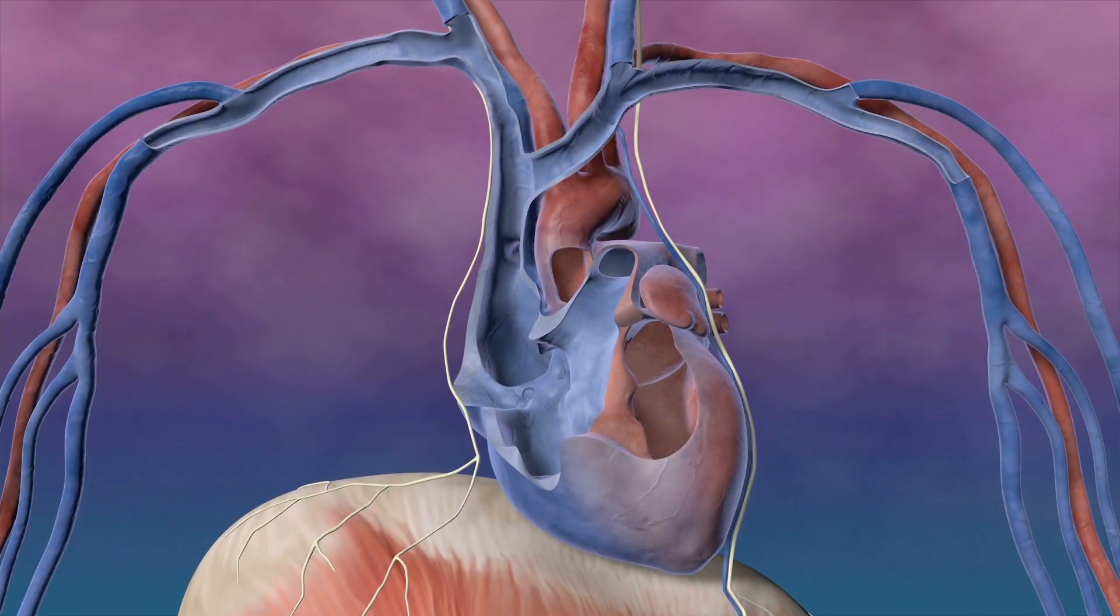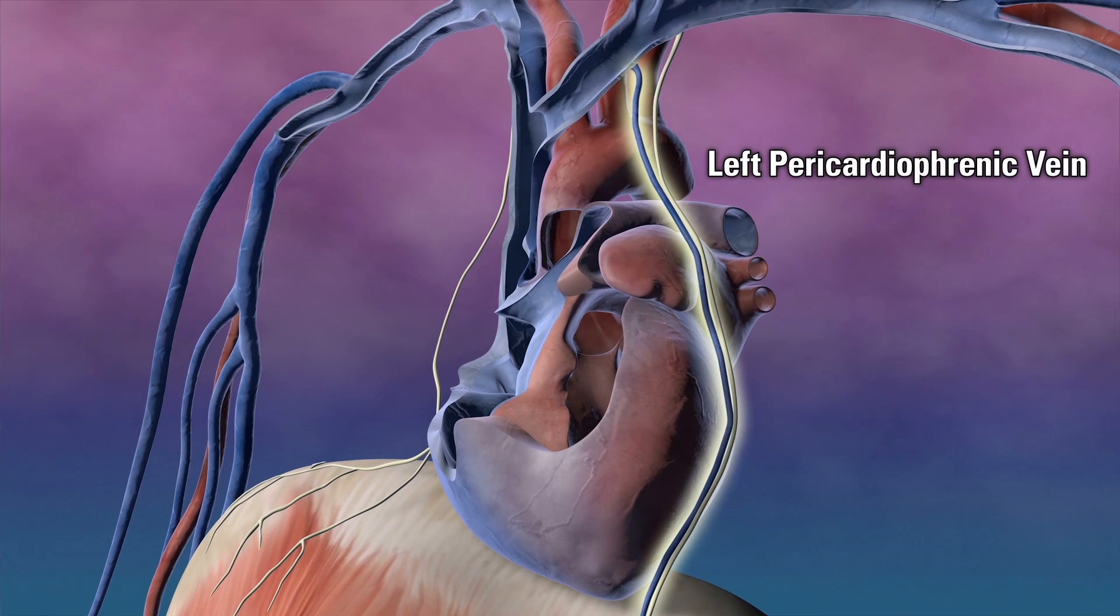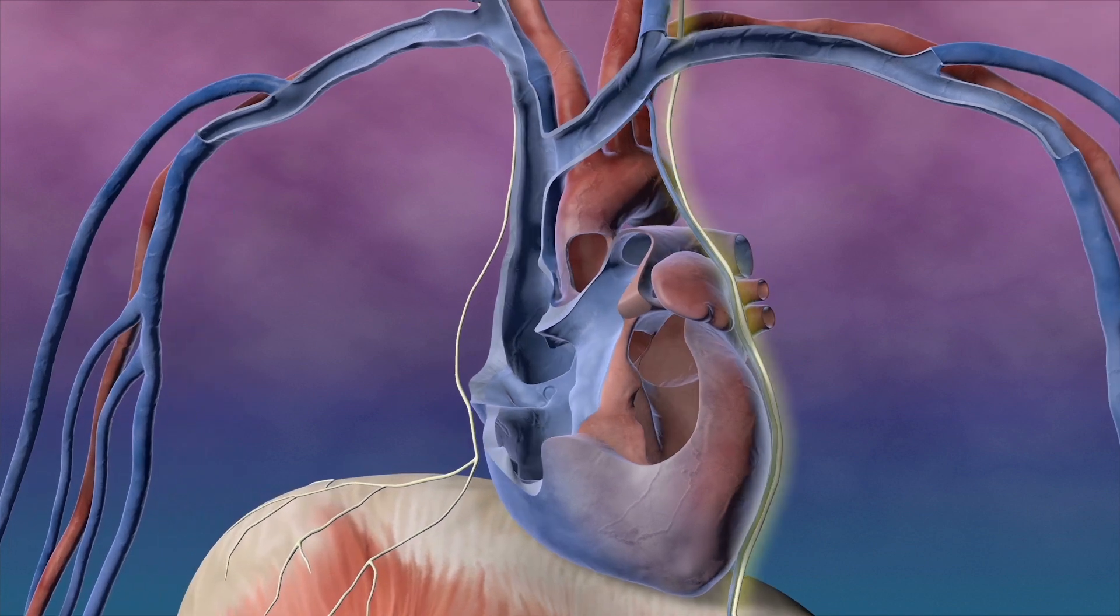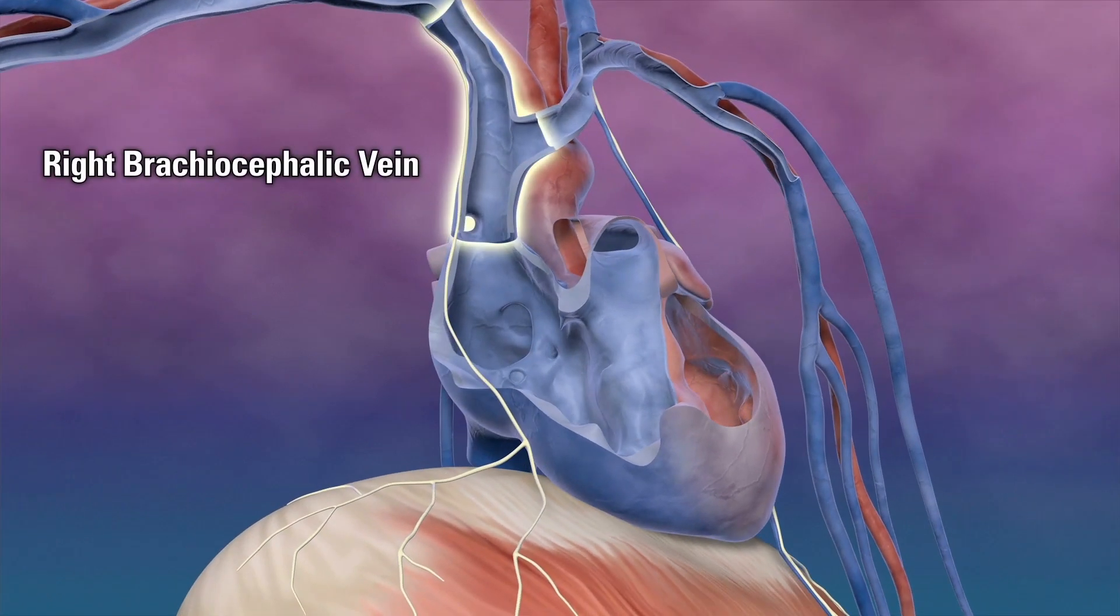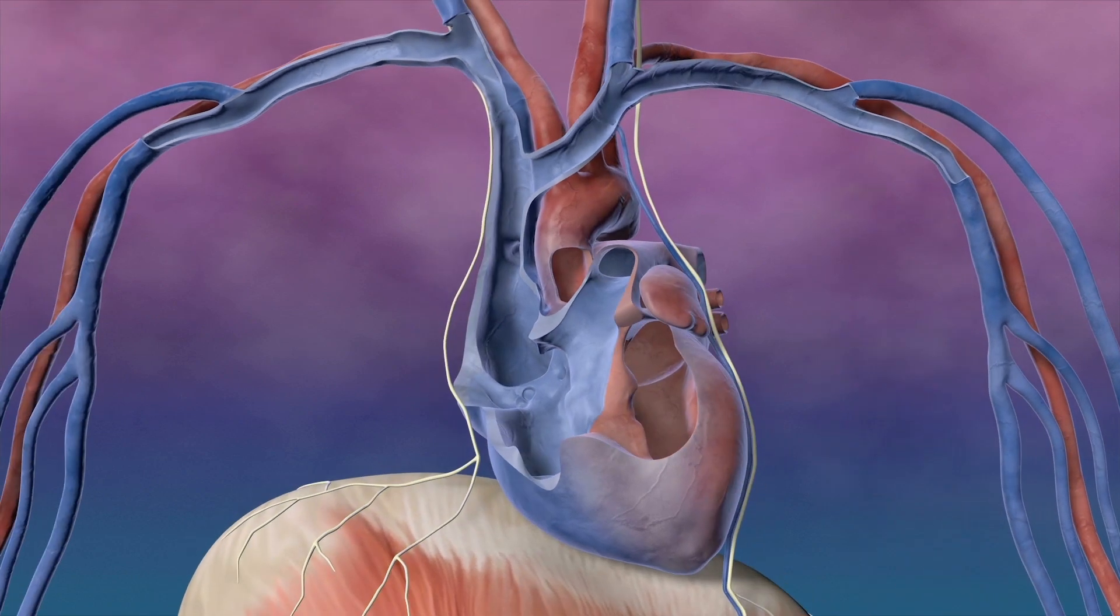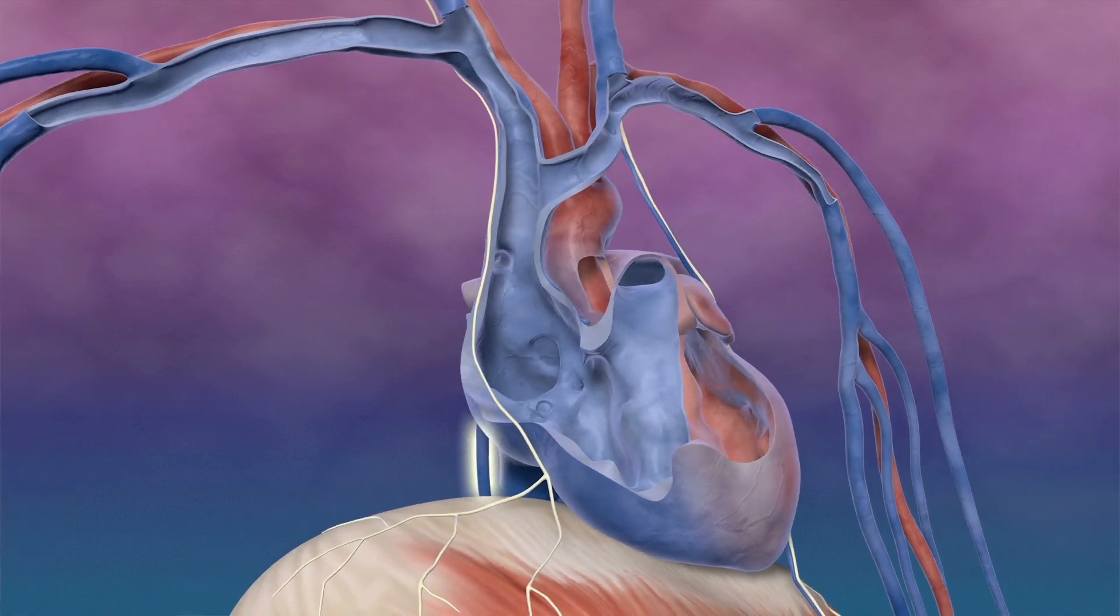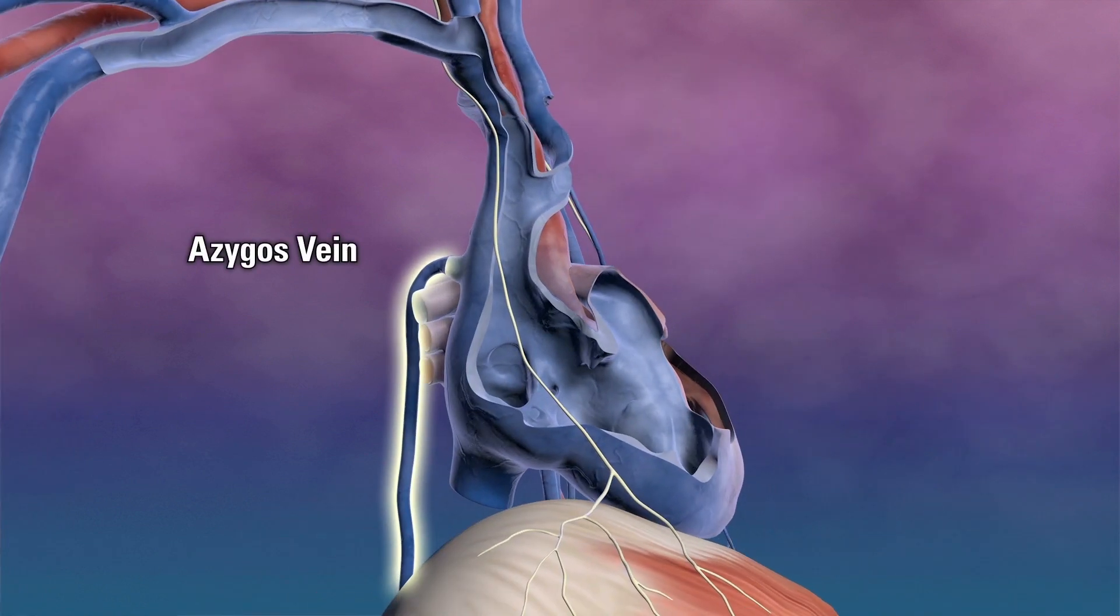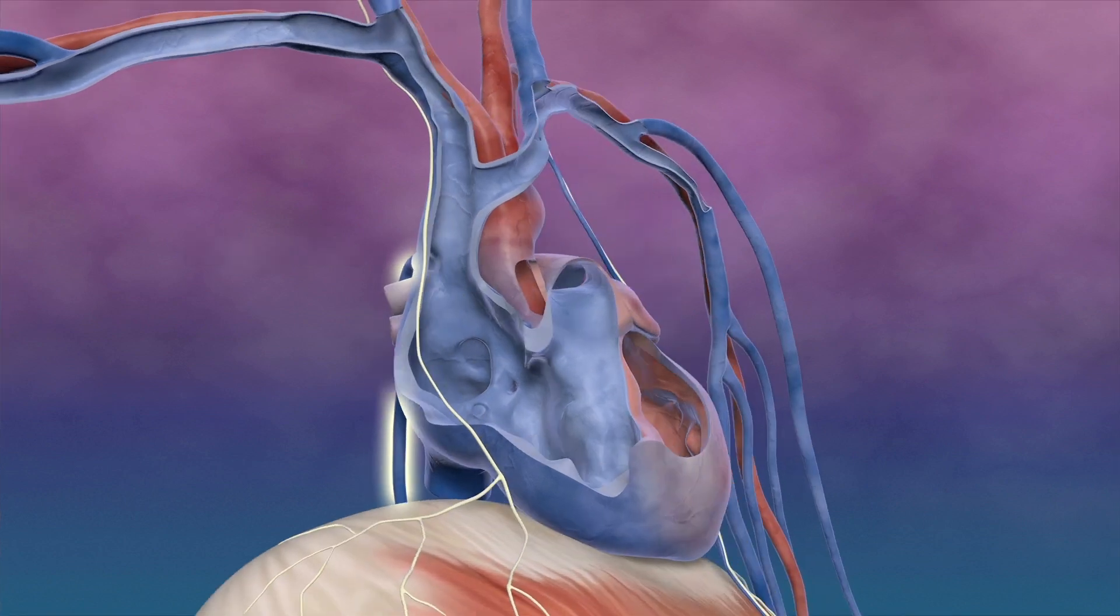There are two venous locations suitable for chronic unilateral transvenous stimulation of the phrenic nerve. The left pericardiophrenic vein, which courses adjacent to the left phrenic nerve, and the right brachiocephalic vein, which courses adjacent to the right phrenic nerve. A stimulation lead is placed in one location or the other. The sensing lead is placed in the azygos vein, which takes off posteriorly from the superior vena cava and courses toward the diaphragm.